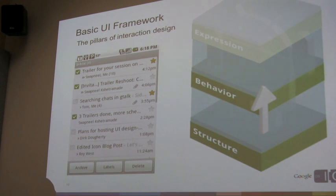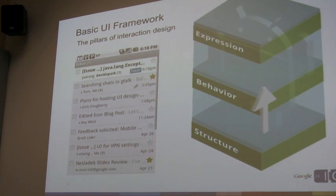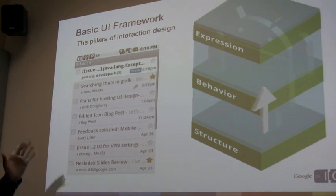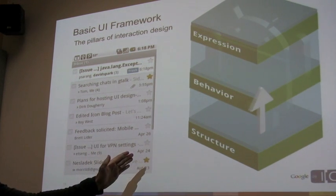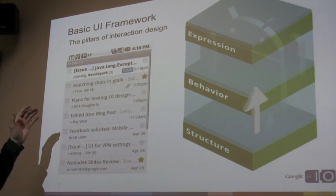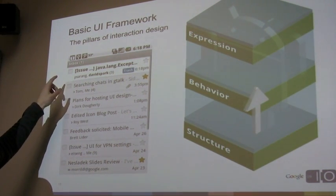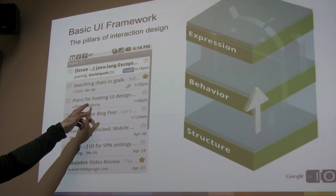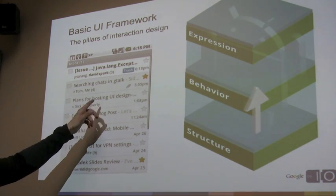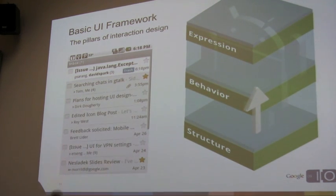What ties this all together is the expression layer. The expression layer tells me that the three zones that I've established as a designer are available to a user through the use of checkboxes, standard list view button element, as well as a favorite star.